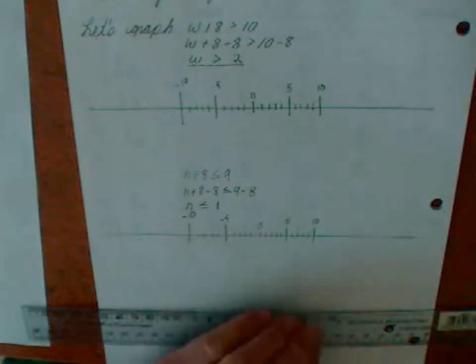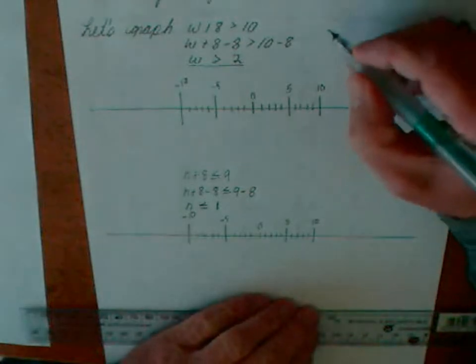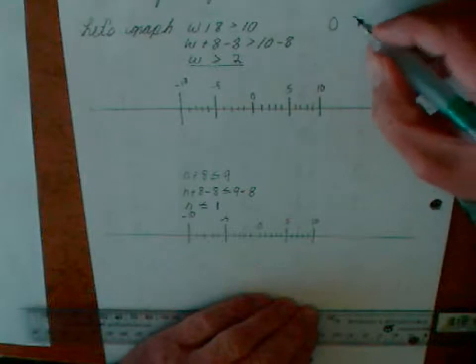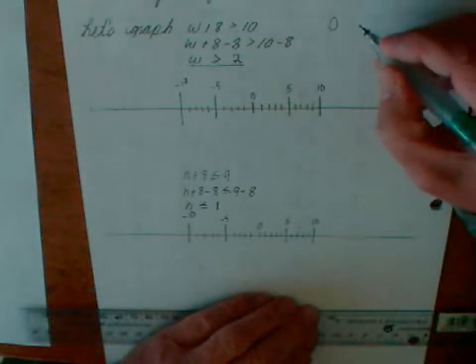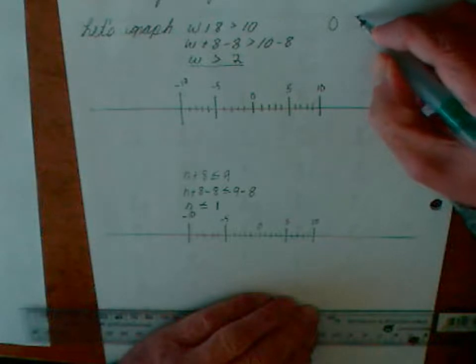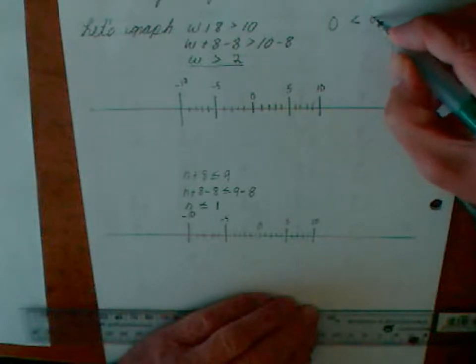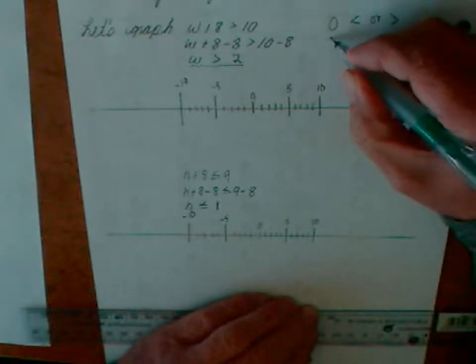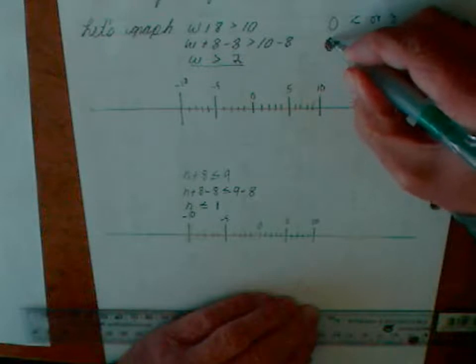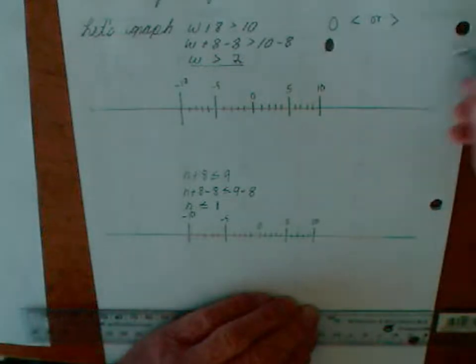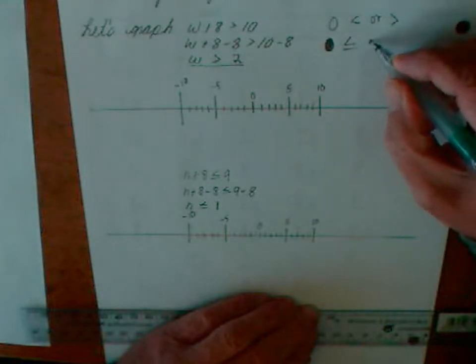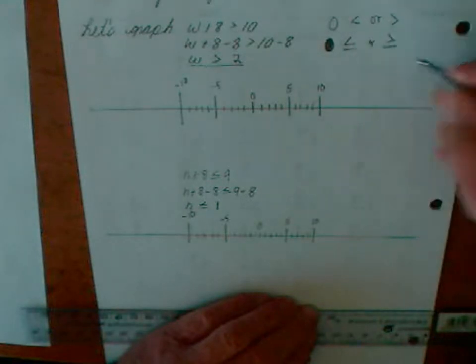So there's two different symbols we use here. I'll just show you here. We're going to use an open circle. This is going to be used for the symbols less than or greater than. If the symbol is going to be filled in, so it kind of looks like a period, that's going to be used for less than or equal to or greater than or equal to.